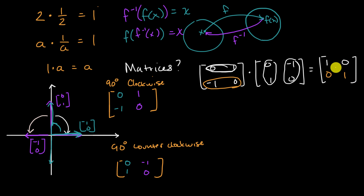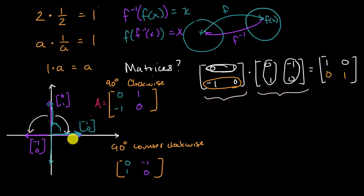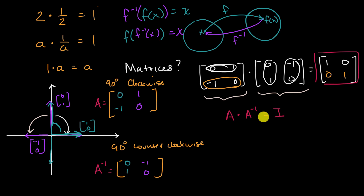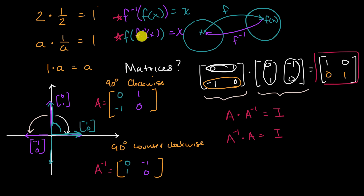This identity matrix is a transformation that just maps everything onto itself. If we view these 2×2 transformation matrices as functions, we've just shown that if we call the first one A, we would call the second one A inverse. So if I were to take matrix A and multiply it times its inverse, I should get the identity matrix. And this holds not just for the 2×2 case, but the 3×3 case, the 4×4 case, and so on. A inverse times A should also be equal to the identity matrix — completely analogous to what we saw with a function and its inverse.